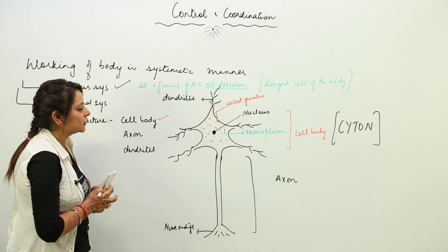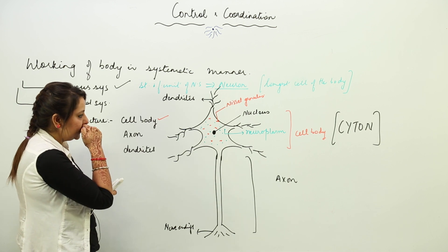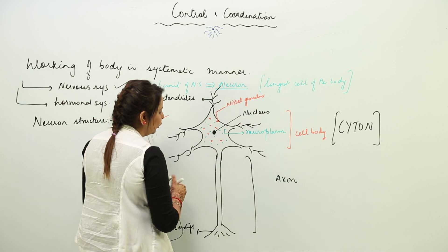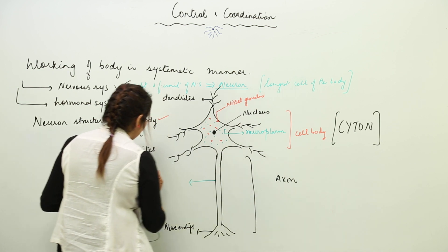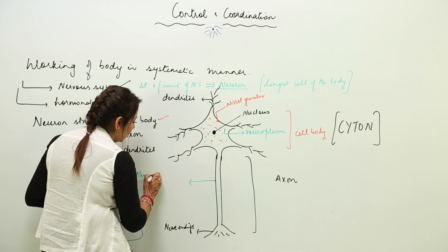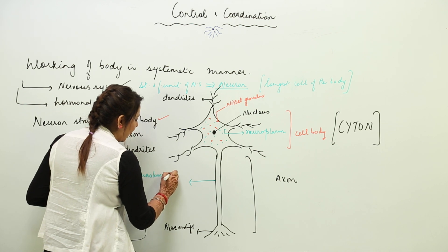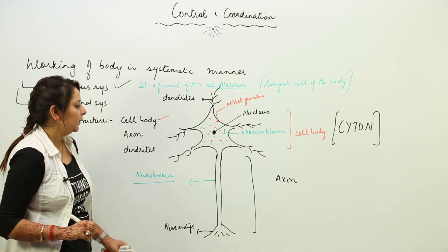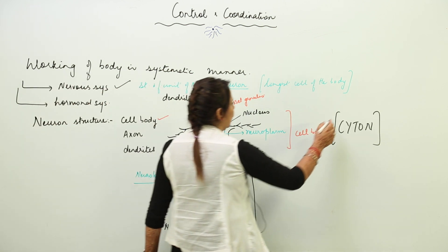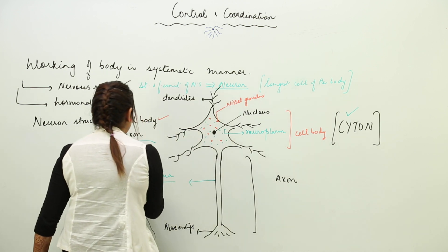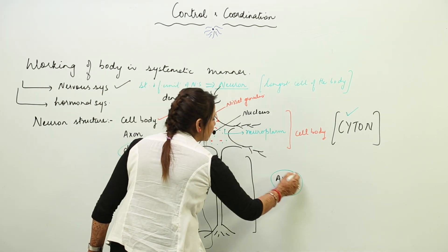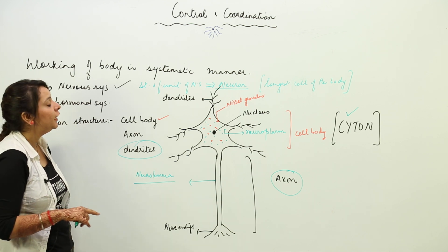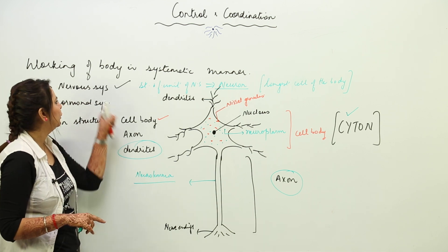The axon extends into nerve endings. The membrane that covers the neuron — forming a continuous covering — is called the neurolemma. So to summarize: a neuron consists of the cyton, dendrites, and axon. This is the longest cell of the body and the structural and functional unit of the nervous system.